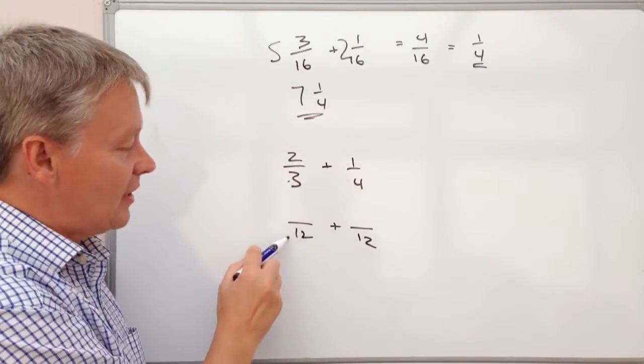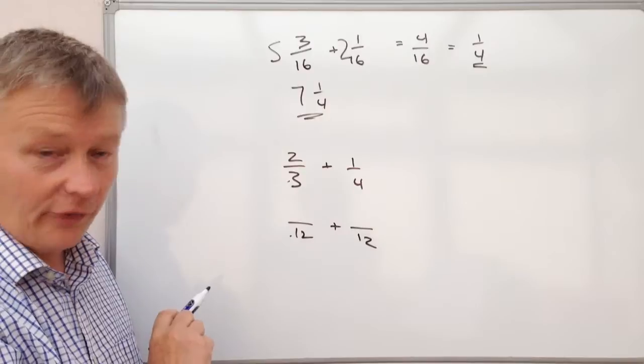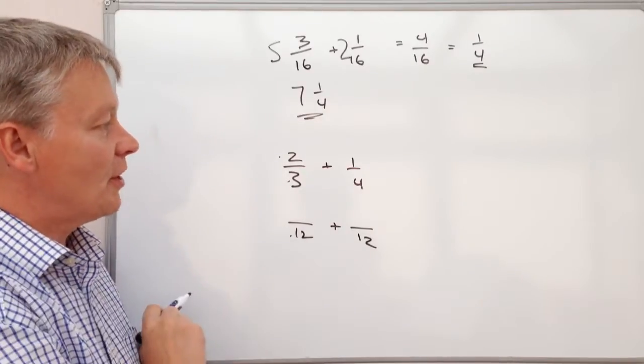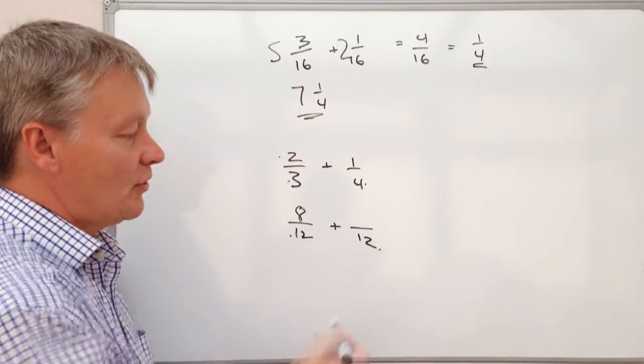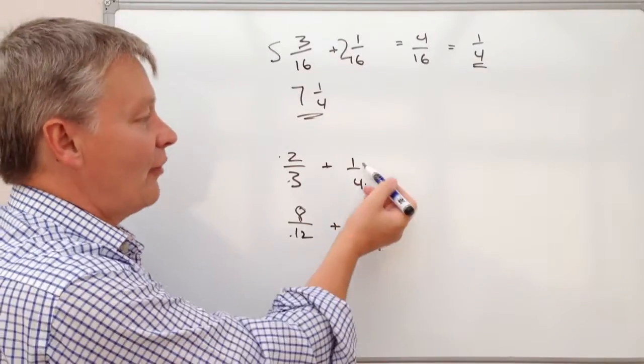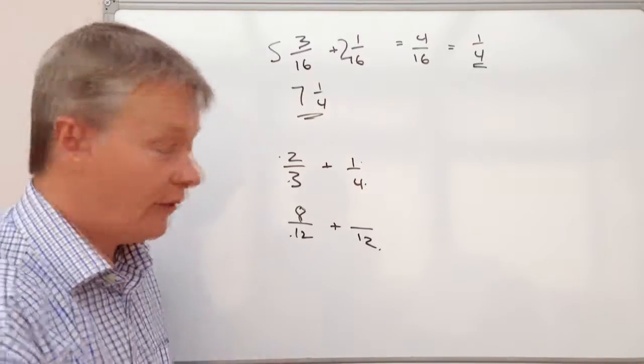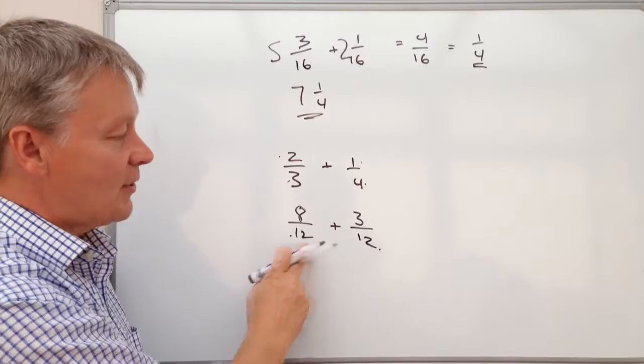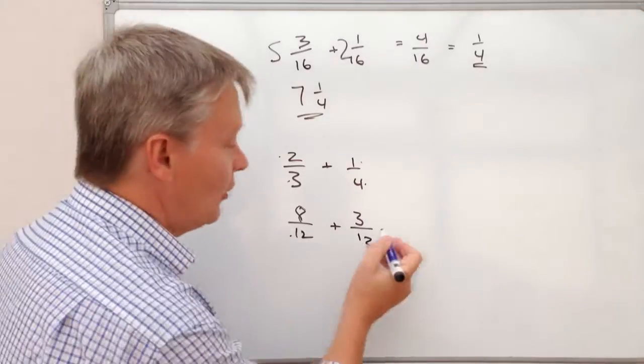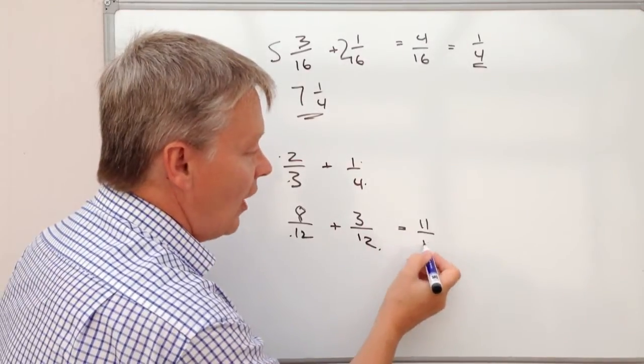So 3 times 4 is 12, so therefore I multiply the top by 4. So 4 times 2 is 8. 4 times 3 is 12, so therefore I'm going to multiply the top number by 3. So that becomes then the same as we had before. So 8/12 plus 3/12 will be 11/12.